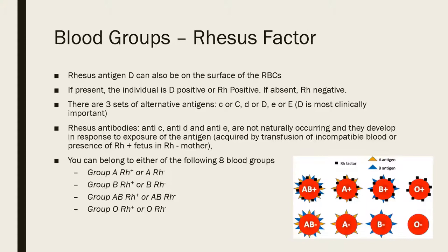Combining the ABO and Rhesus systems, a person can belong to any of eight blood groups: A Rh-positive, A Rh-negative, B Rh-positive, B Rh-negative, AB Rh-positive, AB Rh-negative, O Rh-positive, or O Rh-negative.